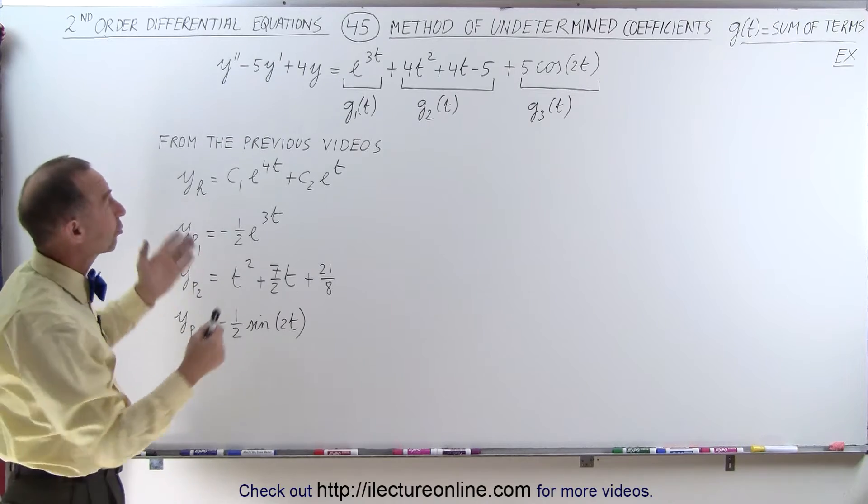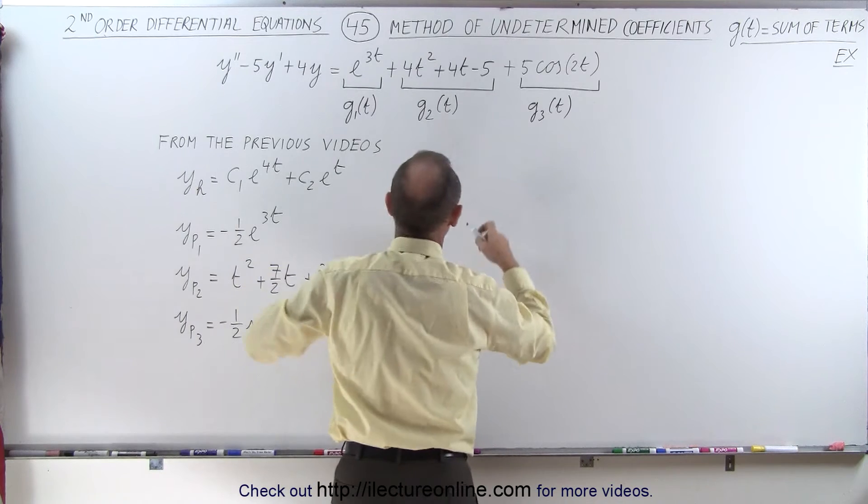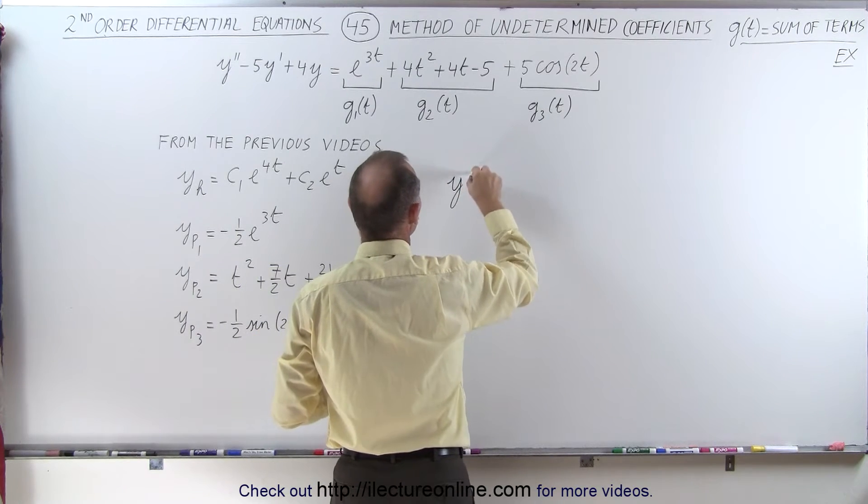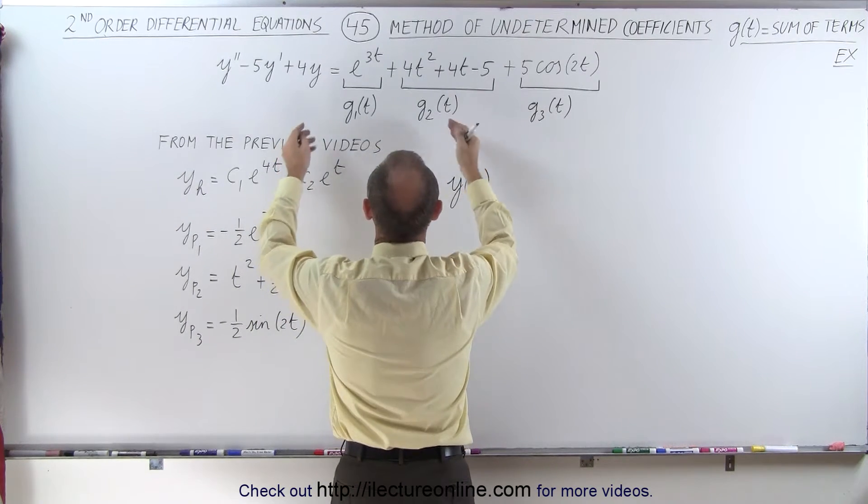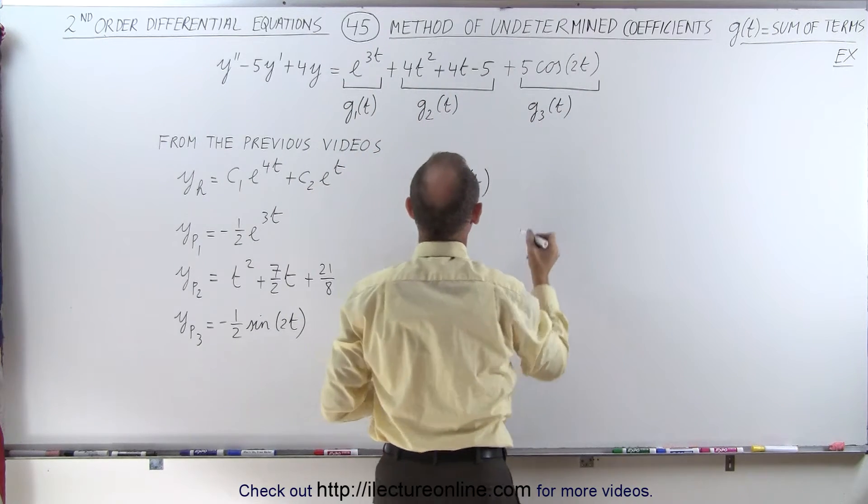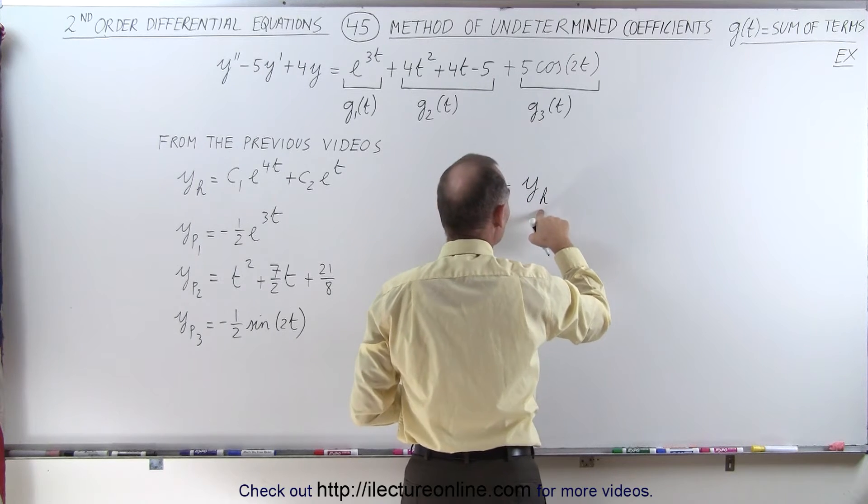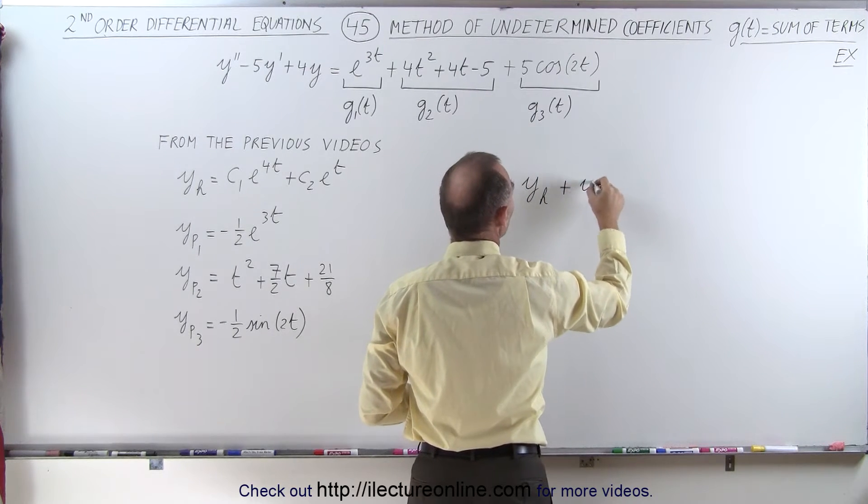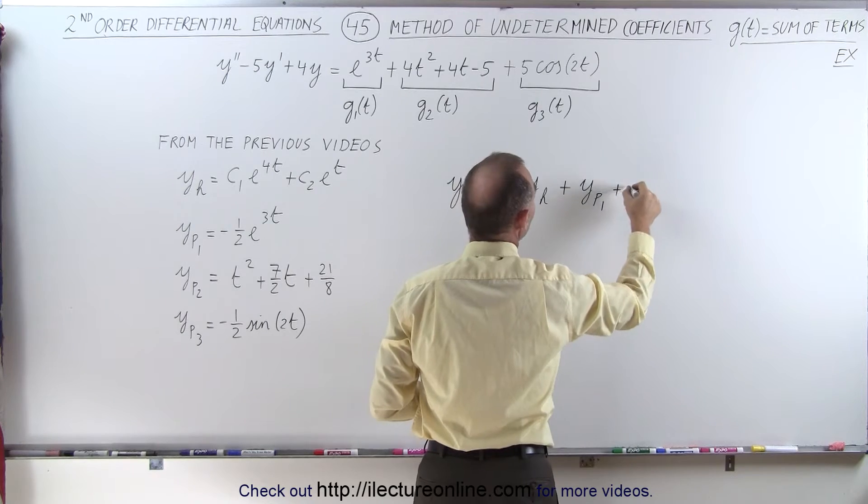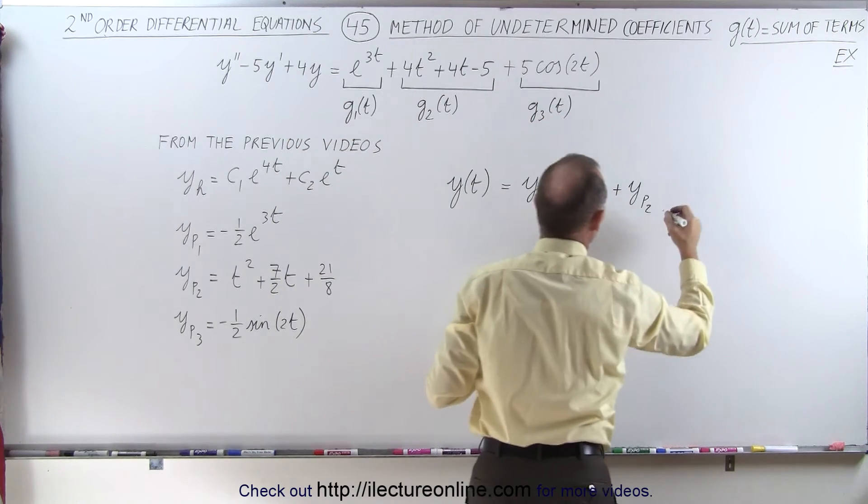Then to find the solution to the entire differential equation, it becomes quite simple. We then realize that the solution of the differential equation, when we add all three functions together on the right side of the equation, this will be equal to the homogeneous portion of the solution plus the sum of the three particular solutions if we write this equation in three separate ways.